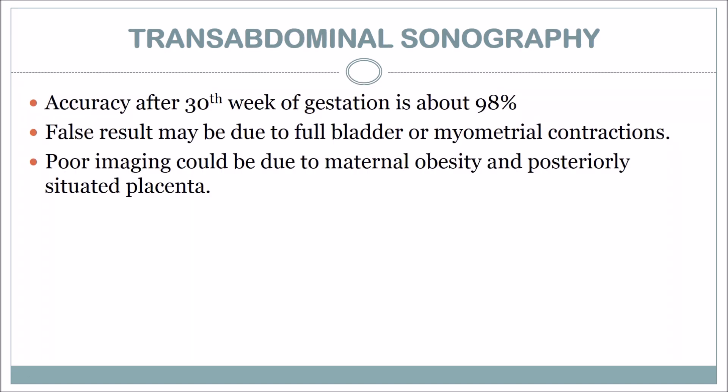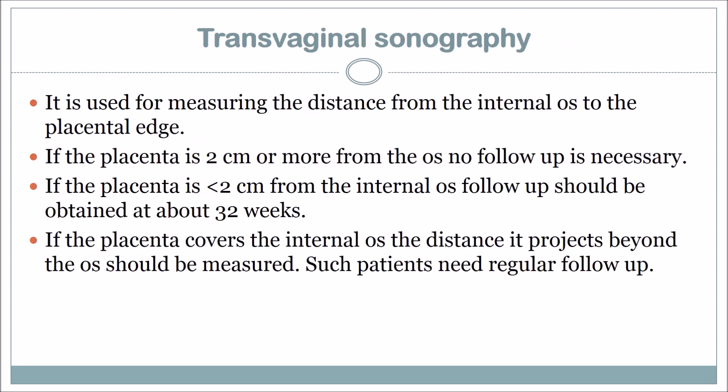Transabdominal sonography accuracy after 30 weeks of gestation is about 98 percent. False results may be due to a full bladder or myometrial contractions; poor imaging may result from maternal obesity or posteriorly situated placenta. Transvaginal sonography is useful for measuring the distance from the internal os to the placenta. If the placenta is 2 cm or more from the os, no follow-up is necessary. If less than 2 cm, follow-up should be obtained at about 32 weeks. If the placenta covers the internal os, the distance it projects beyond should be measured and regular follow-up is needed.